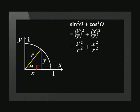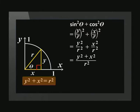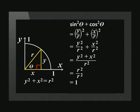Squaring, we get y squared over r squared plus x squared over r squared. Expressing this as a single fraction gives (y squared plus x squared) all over r squared. We know that this is a right-angled triangle, so Pythagoras' theorem holds. We can replace y squared plus x squared with r squared, giving us r squared over r squared, which simplifies to 1. This is our first identity, known as the squares identity.